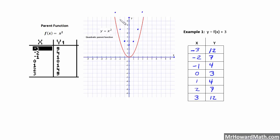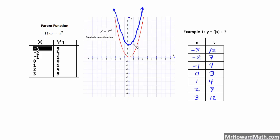I went ahead and plotted the points, and then we'll just fit our graph in here. Notice how all of the y coordinates just moved up 3. We took the f of x plus 3, so we moved the y coordinates up 3 — vertical shift up 3. The width of the parabola did not change; we didn't stretch it in any way, we just moved it vertically up 3. Let's look at the next example.